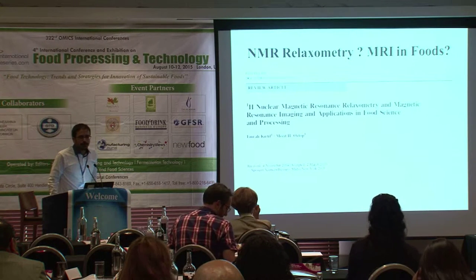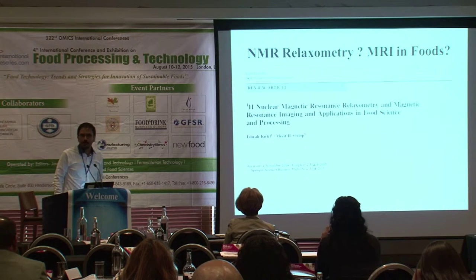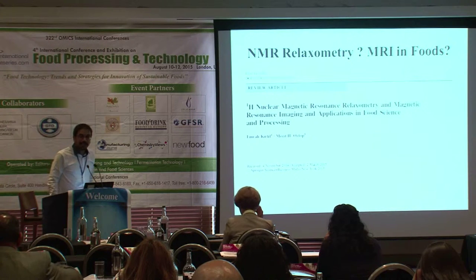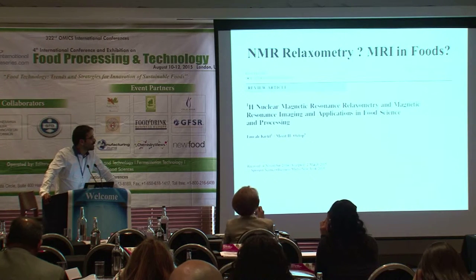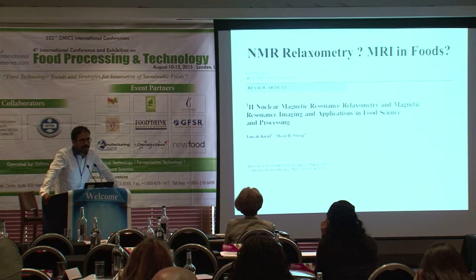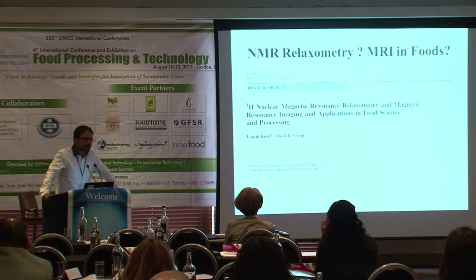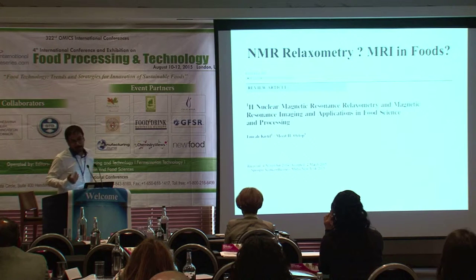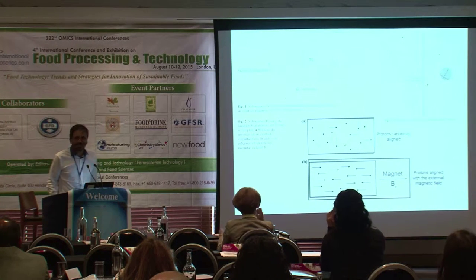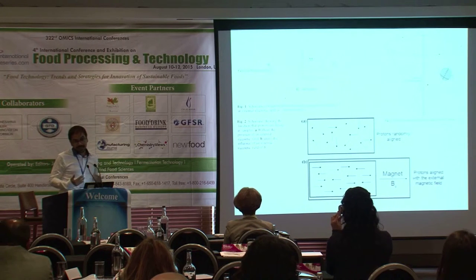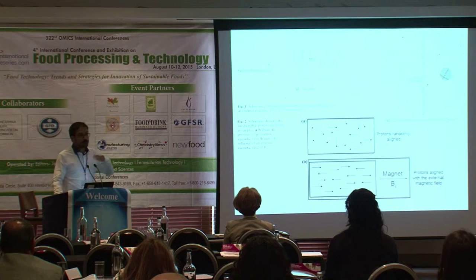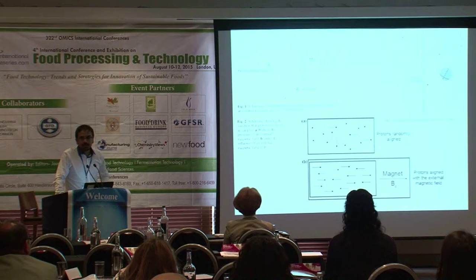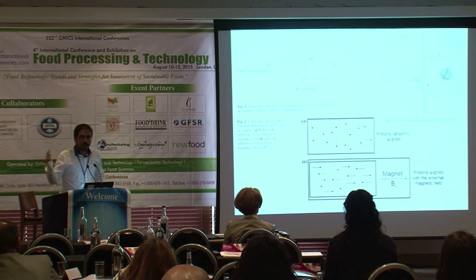First, I want to make an introduction. We talk about NMR relaxometry or MRI, and we usually study these terms for foods. We have just published a review on the applications of magnetic resonance imaging on foods, which also gives a basic introduction about the fundamentals of MRI or acquiring an NMR signal. Whenever you put a food sample into a magnet, the protons align with the magnetic field, and then they start to spin at a frequency which is proportional to the magnetic field strength of the magnet, and then you apply an RF pulse.